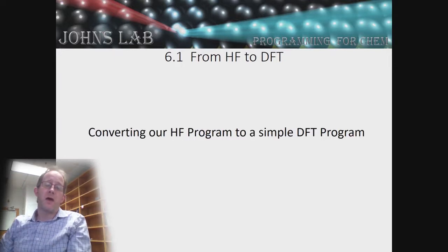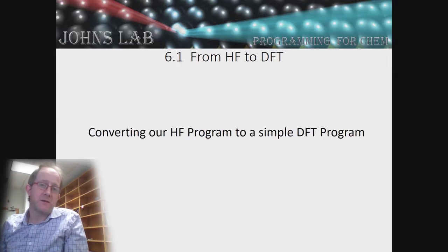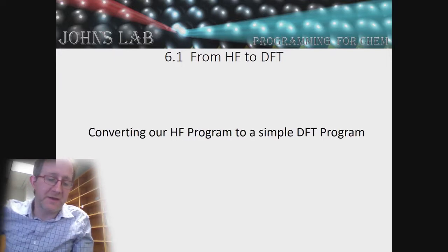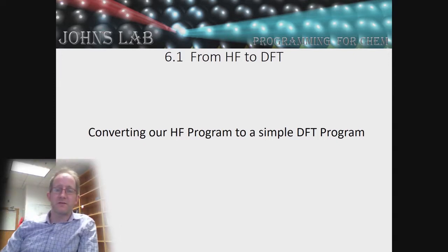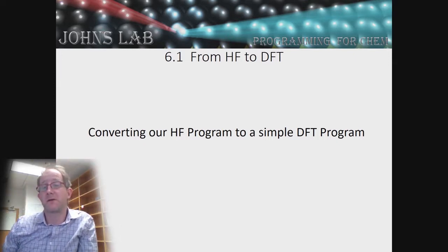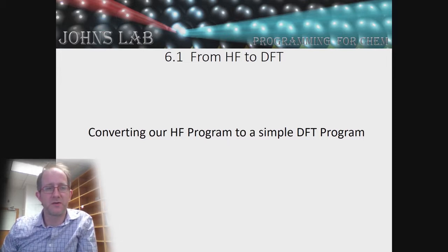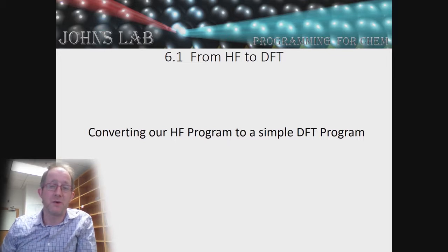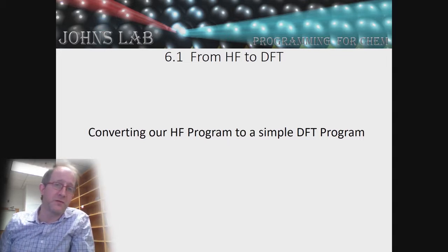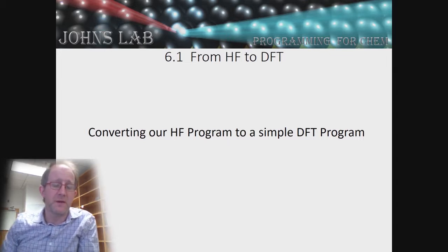Hi everyone, this is James Johns from the University of Minnesota coming back again to finish up the series on electronic structure programming for chemistry. In the past we've written a Hartree-Fock program which has gone through the Hartree-Fock algorithm looking at the hydrogen molecule and the 6-31G basis set.